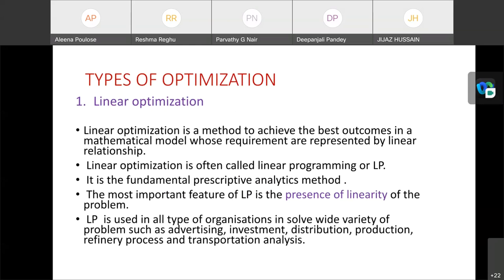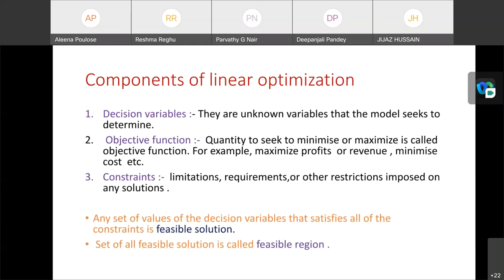What are the components of linear optimization? First one is decision variables. They are unknown variables that a model seeks to determine. It includes the quantities of different products to produce or the amount of money spent on research and development projects, the amount to ship from a warehouse to a customer. Next one is an objective function. It's a quantity to seek to minimize or maximize is called objective function. It means profit to maximize or cost to minimize. That is objective function.